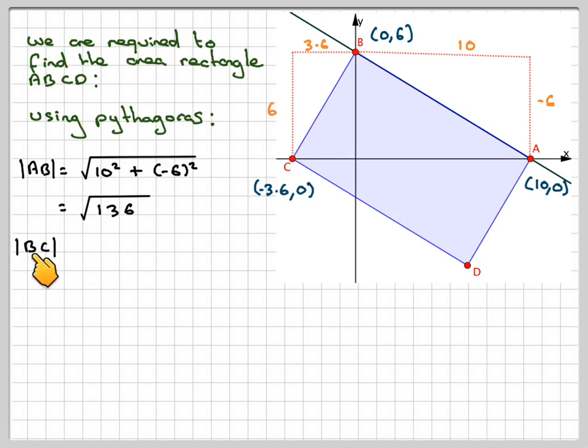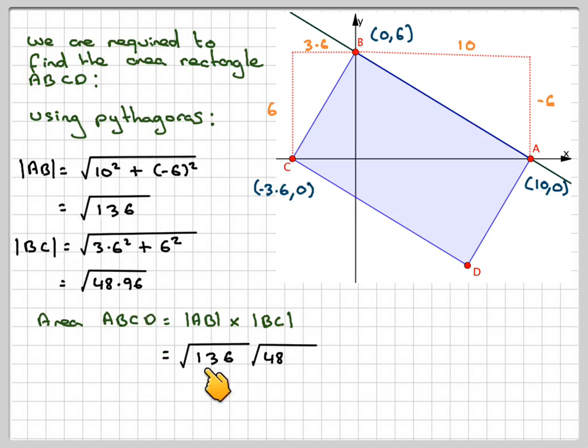And then you've got the magnitude of BC, which is this line here, which is going to be the square root of 3.6 squared plus 6 squared, which gives you the square root of 48.96. And then the area of the rectangle is going to be this length times this length, which gives you the square root of 136 times the square root of 48.96, which gives you an answer of 81.6 square units.